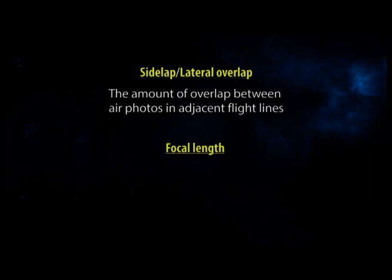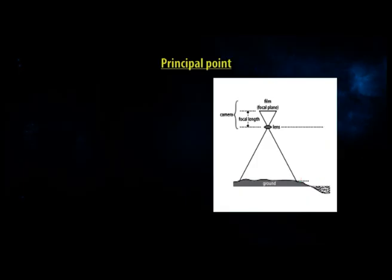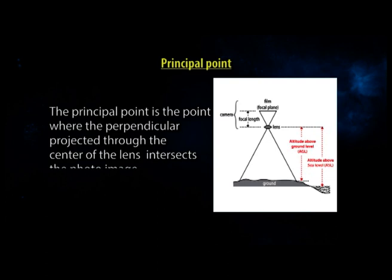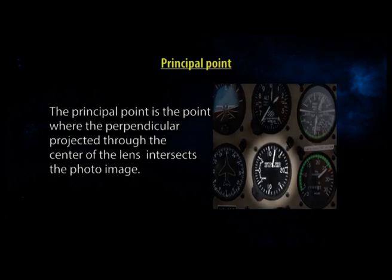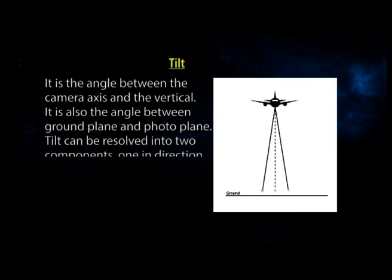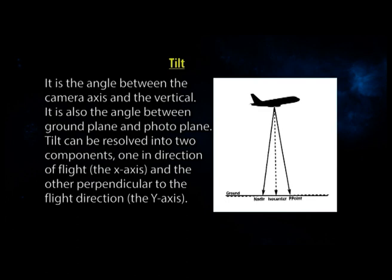Focal length: the distance from the optical center of the lens to the focal plane. Flying height or altitude: the vertical distance of the aircraft above the datum (usually mean sea level) during flight, measured using an instrument called an altimeter mounted in the aircraft. Tilt: the angle between the camera axis and the vertical or plumb line, also the angle between the ground plane and the photo plane. Tilt can be resolved into two components — one in the direction of flight (x-axis) and the other perpendicular to the flight direction (y-axis).